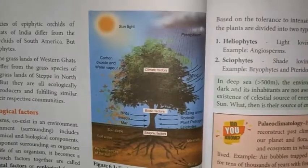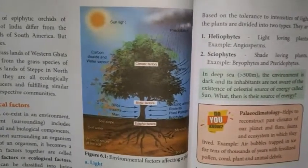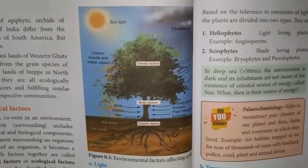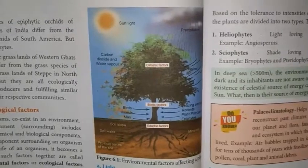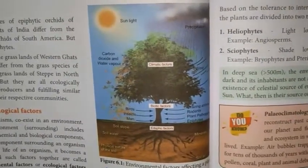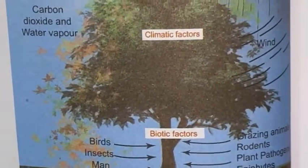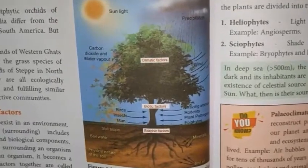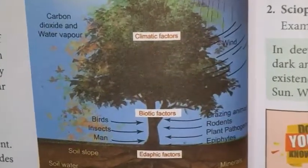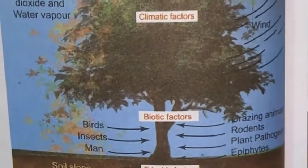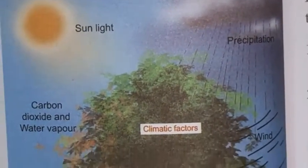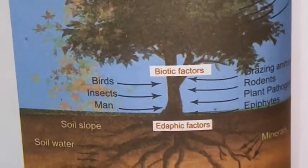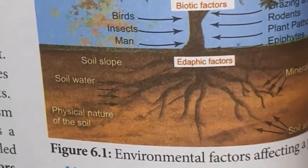Many organisms coexist in the environment. The surrounding environment includes physical, chemical, and biological components. When a component surrounding an organism affects the life of that organism, it becomes a factor. All such factors together are called environmental factors or ecological factors.